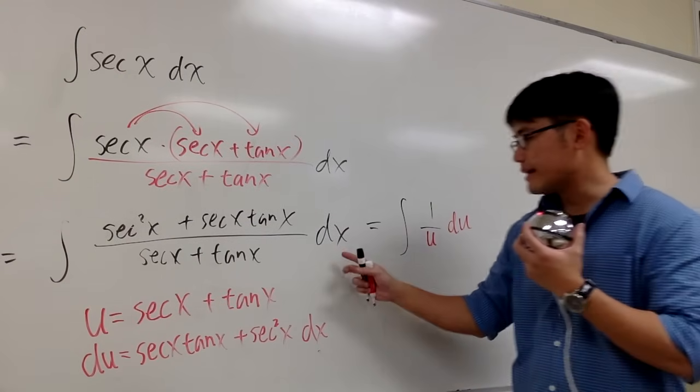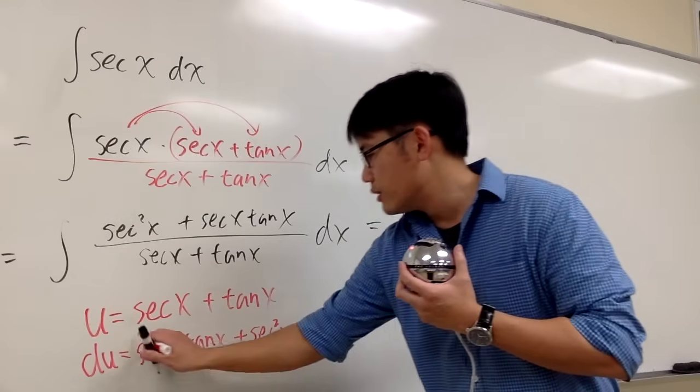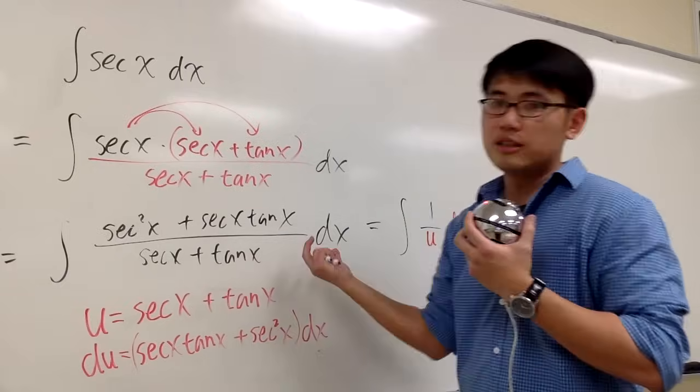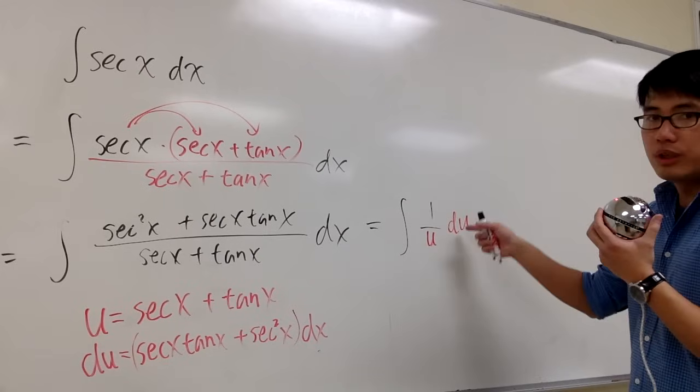Okay? And usually I tell you guys to isolate the dx, but if I divide both sides by this, right, let's put parentheses right here. If I divide both sides by this, you see this and that will cancel each other out. And we'll just get 1 on the top. And we have 1 over u du right here.